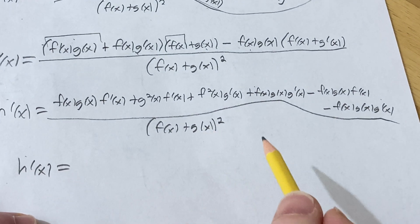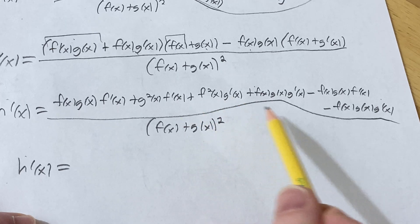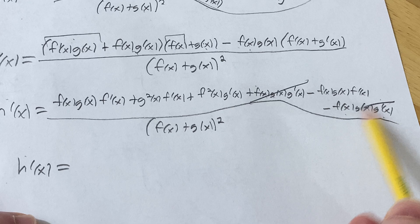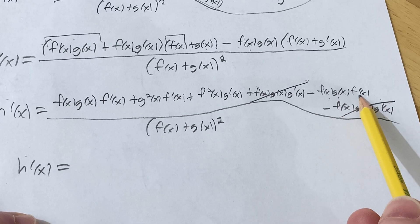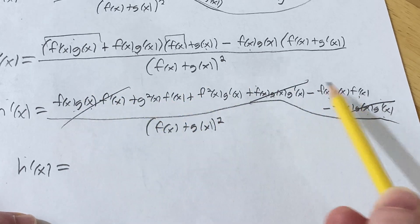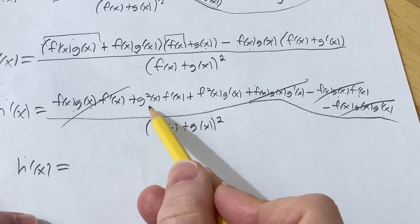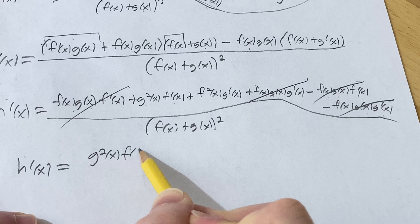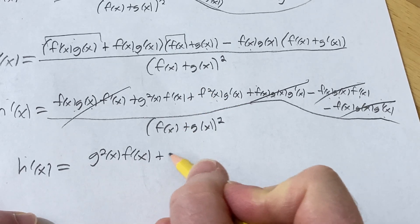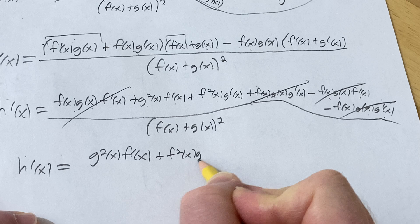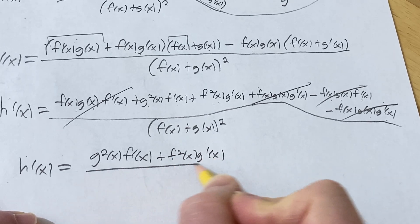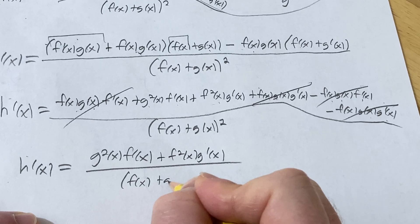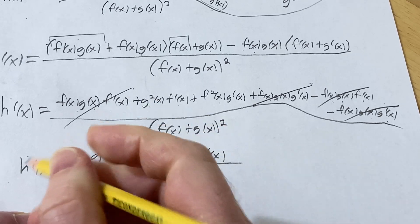Some terms cancel. We have f·g·g prime and minus f·g·g prime — those cancel. And f·g·f prime and minus f·g·f prime — those cancel too. So we're left with g squared·f prime plus f squared·g prime.